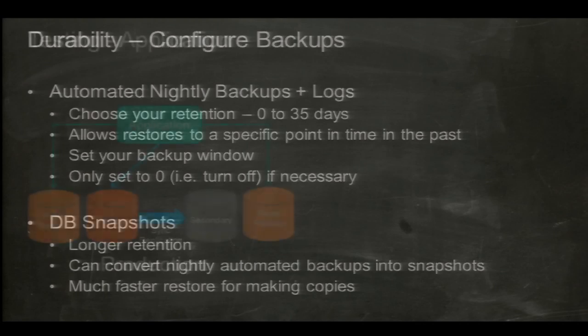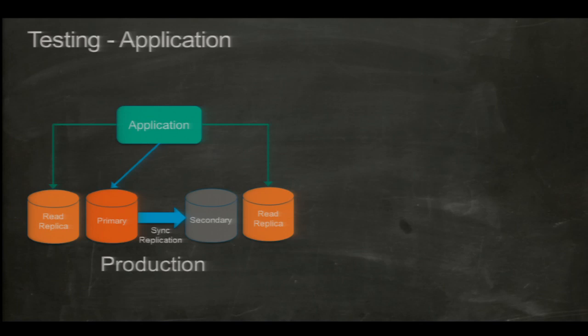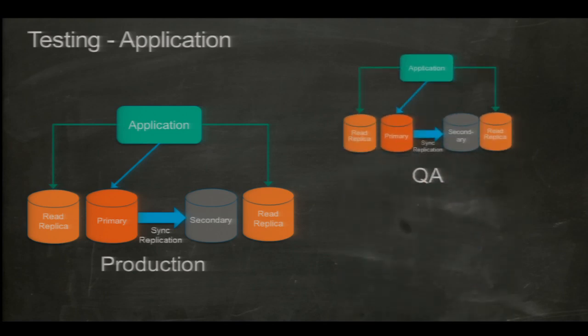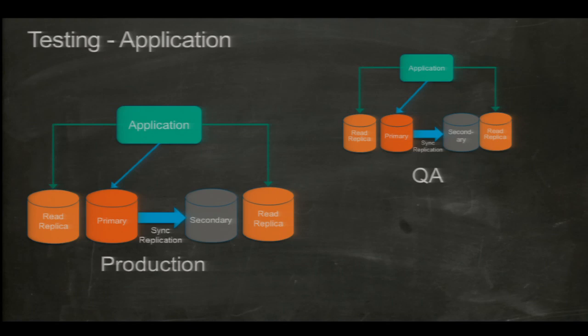Once you have your production setup with Multi-AZ and read replicas, you really want to set up a test environment. With RDS you have the flexibility to do this in miniature — all the same functionality but at lower cost by running smaller instances. If production uses extra-large instances, you can use smalls in QA, which are a quarter of the price. This really allows you to test failover, test reboots, and make sure everything works in your application.